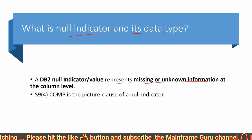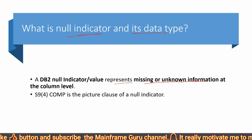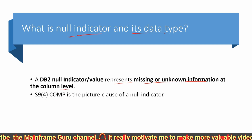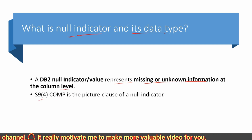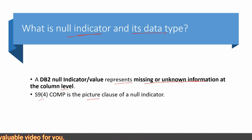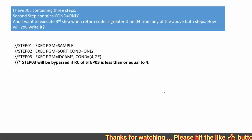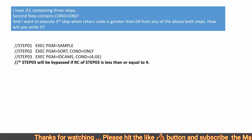The next question is: what is a null indicator and which data type does a DB2 null indicator use? A null indicator actually represents missing or unknown information at the column level. S9(4) COMP is the PIC clause of a null indicator.